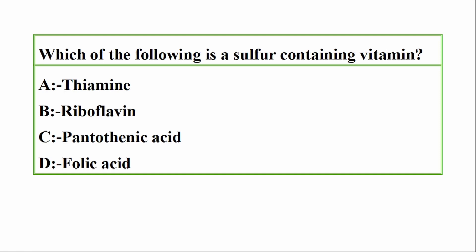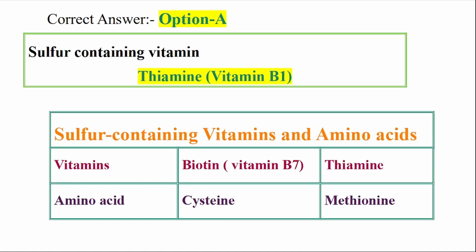Question: Which of the following is a sulfur-containing vitamin? Options: A — Thiamine, B — Riboflavin, C — Pantothenic acid, D — Folic acid. Correct answer: Option A — Thiamine. Thiamine is a sulfur-containing vitamin, also known as Vitamin B1.